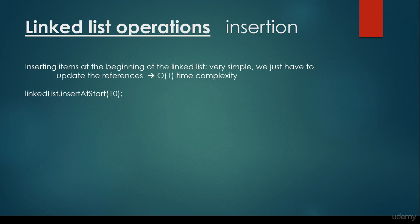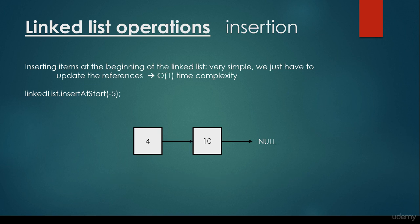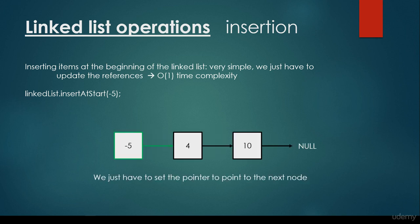We insert item 10 as the first item and it is going to point to null. Then we would like to insert 4. We just have to insert the 4 and set the pointer to point to the next node, which is the 10 in this case. What about if we would like to insert minus 5 at the beginning? We just have to insert it and set the pointer pointing from minus 5 to the next node, which is the 4 in this case.